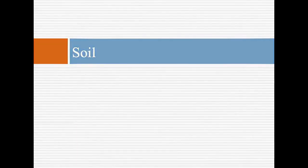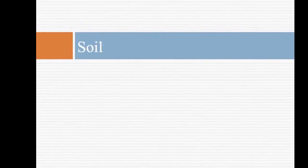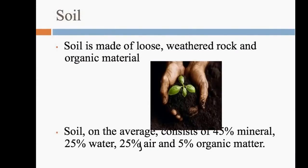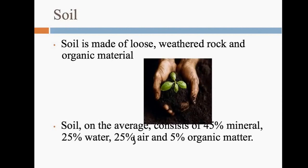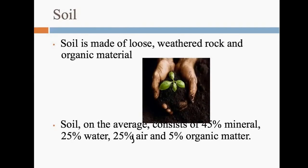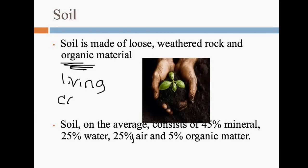We are bringing our weathering and erosion notes to a close with soil. Soil is not really going to be defined as something as much as it is something — it is made up of loose, weathered rock or broken down rock and organic material. Organic means it came from something that was once living and also contains carbon.